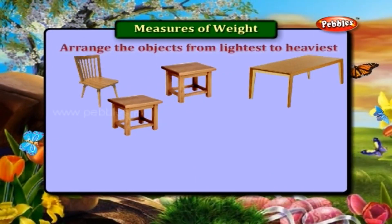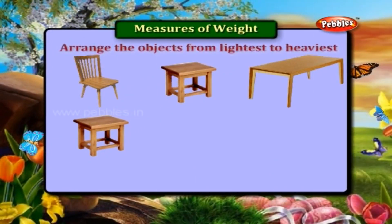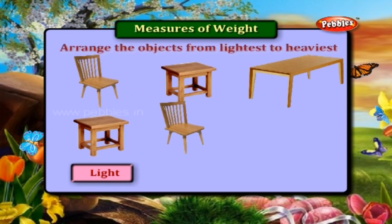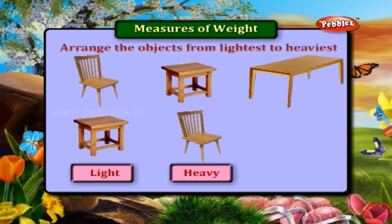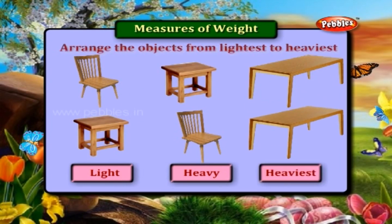The stool is light. The chair is heavy. And the table is the heaviest.